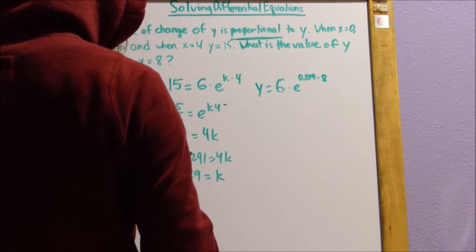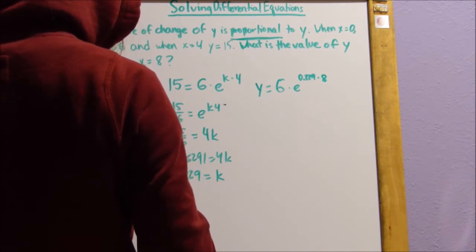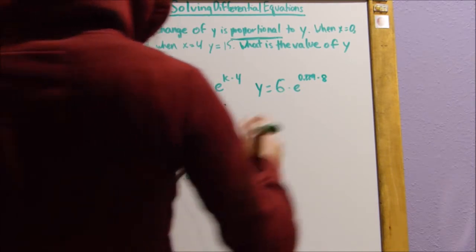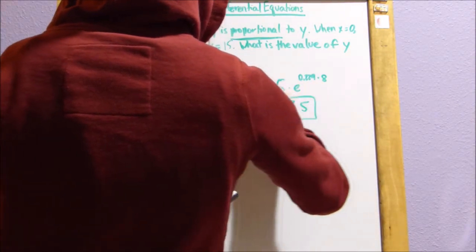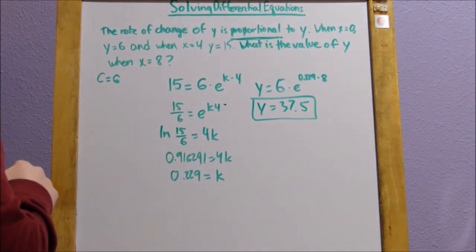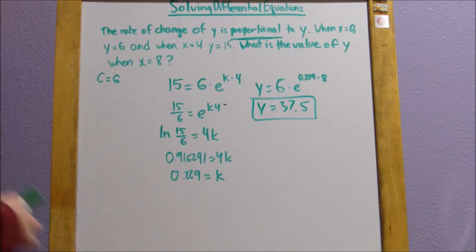6 times e to the 0.8, y equals 37.5. So that's our solution. The value is 37.5 when x equals 8.